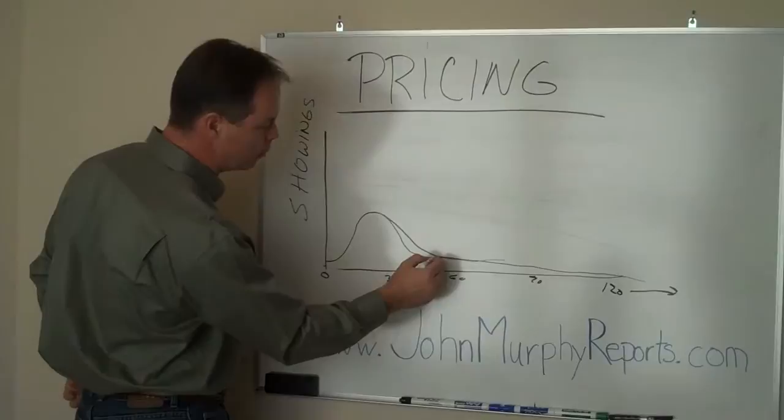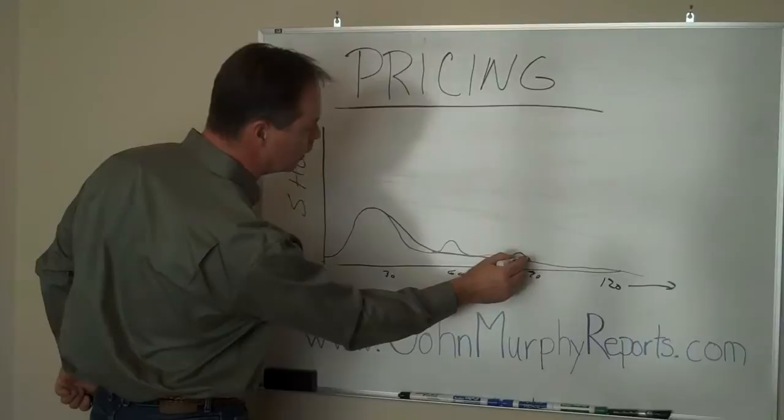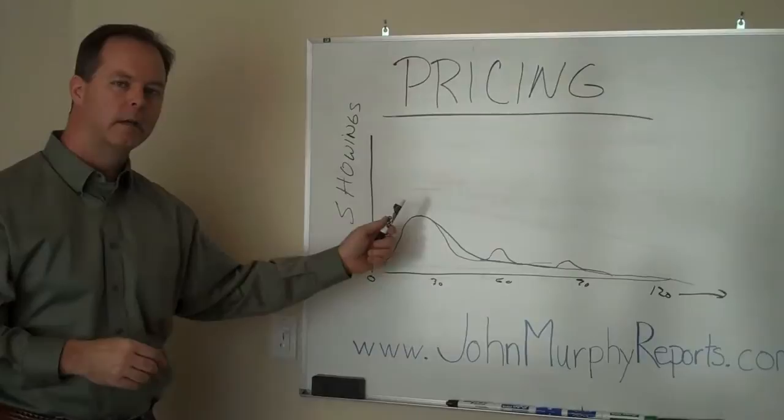Then what happens, you eventually do a price reduction somewhere, and you'll see a little blip in showings, and that'll tail off. And then you'll see a little blip in showings again, and it will tail off.